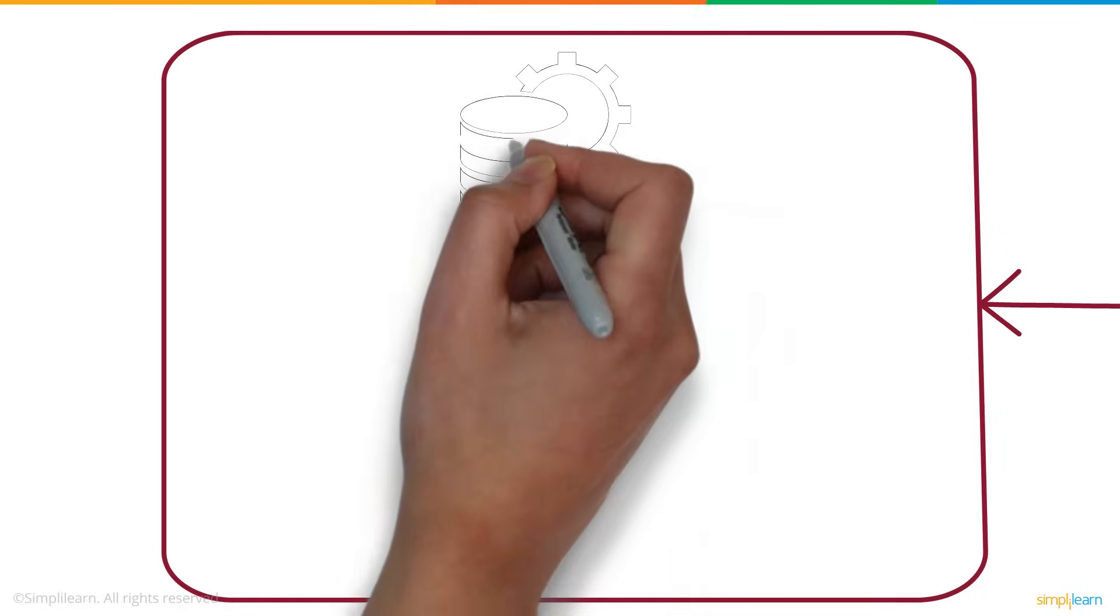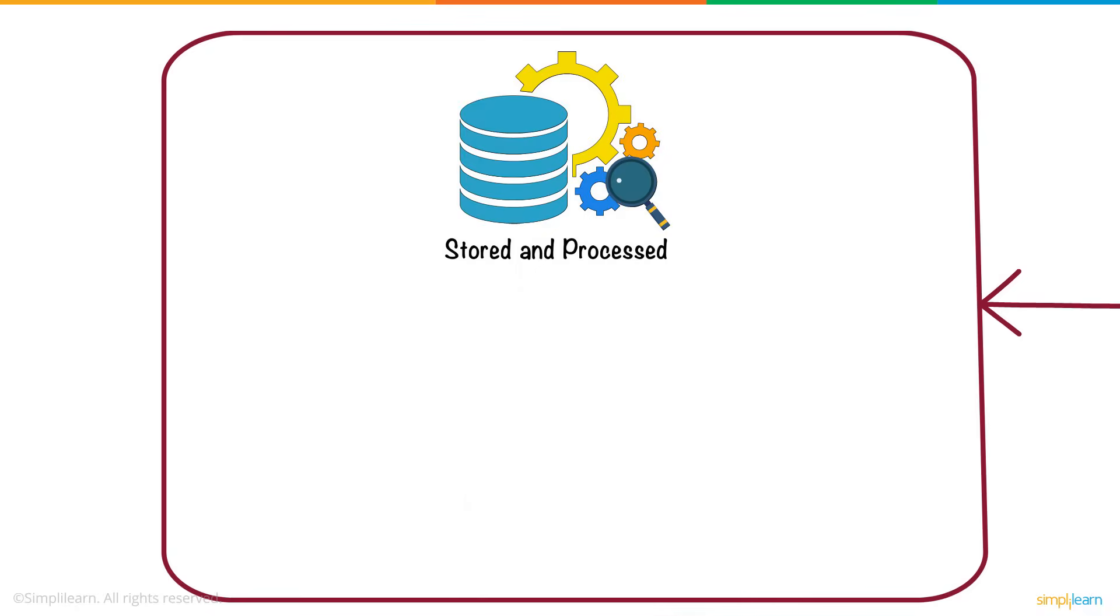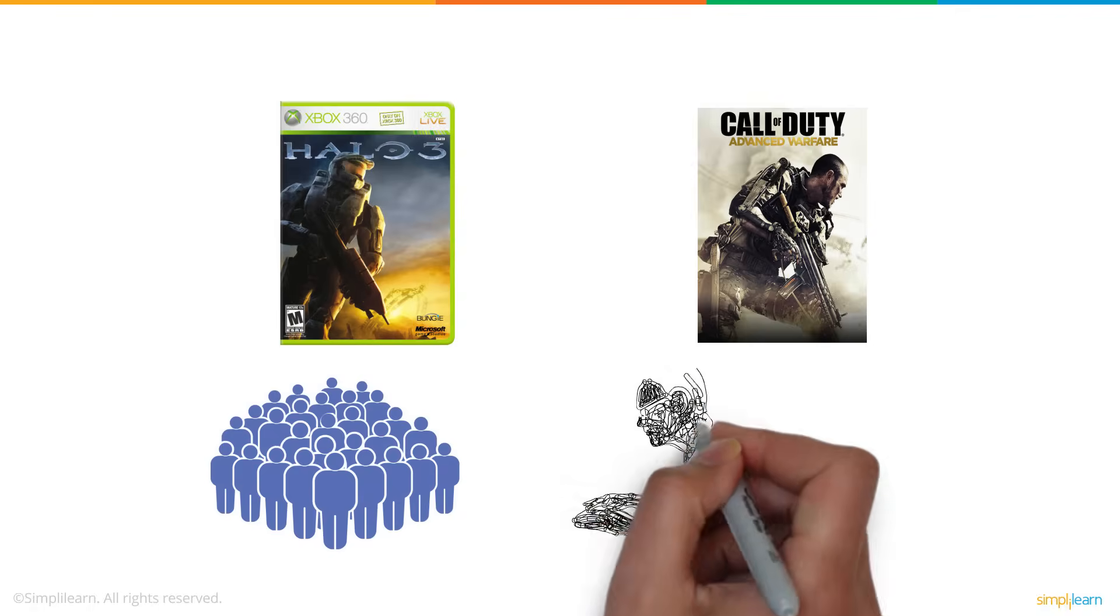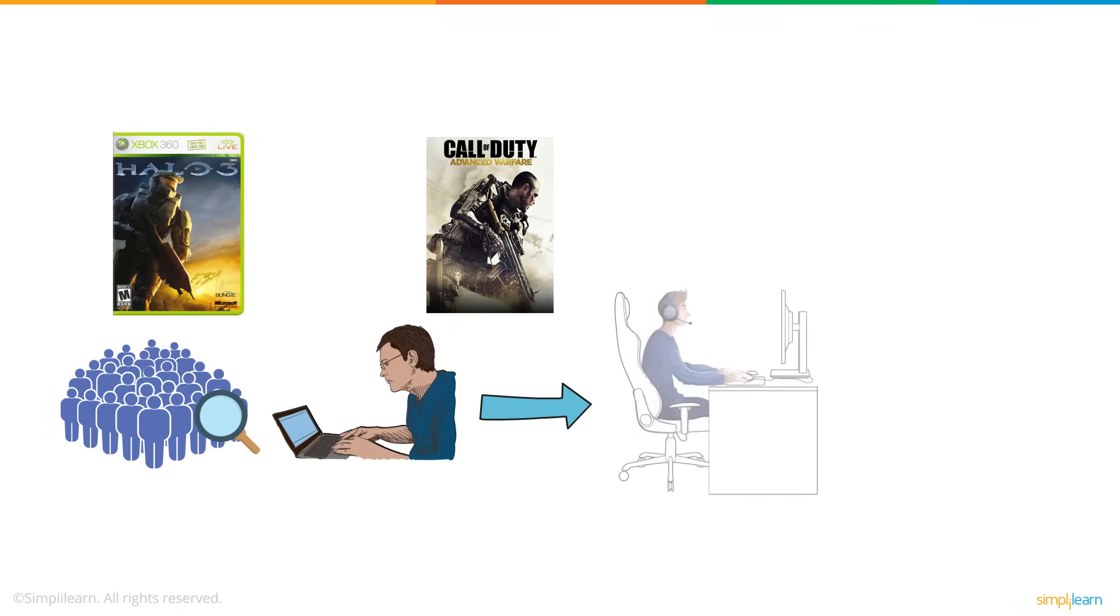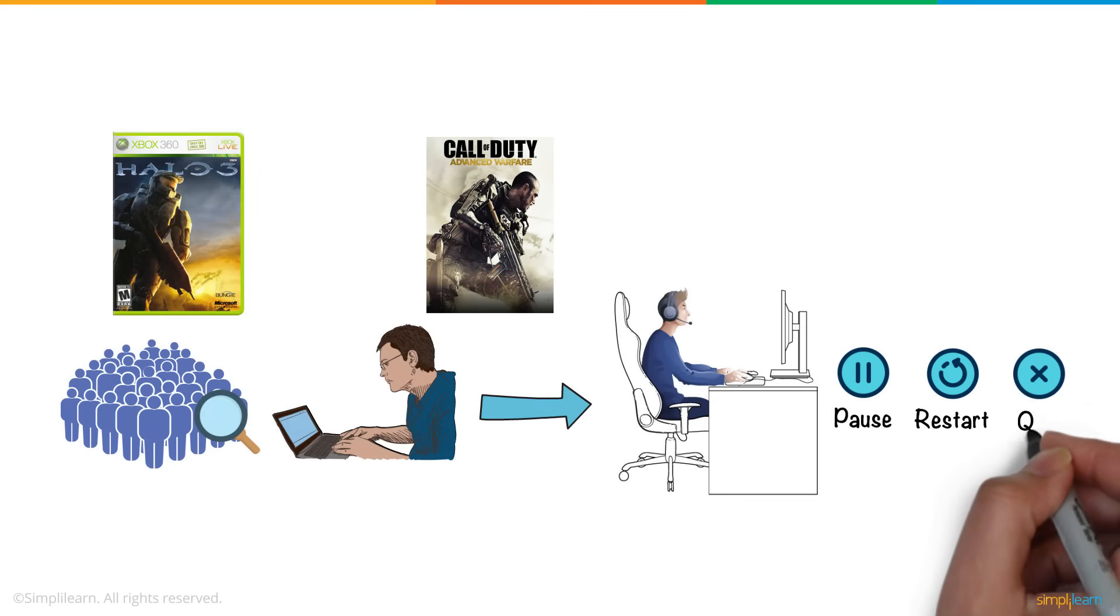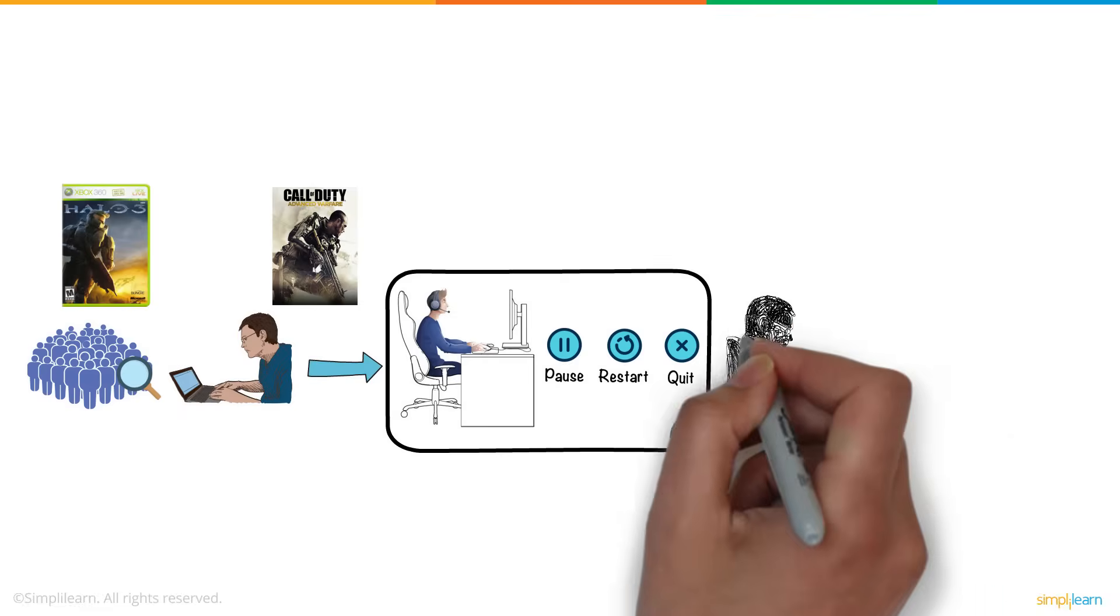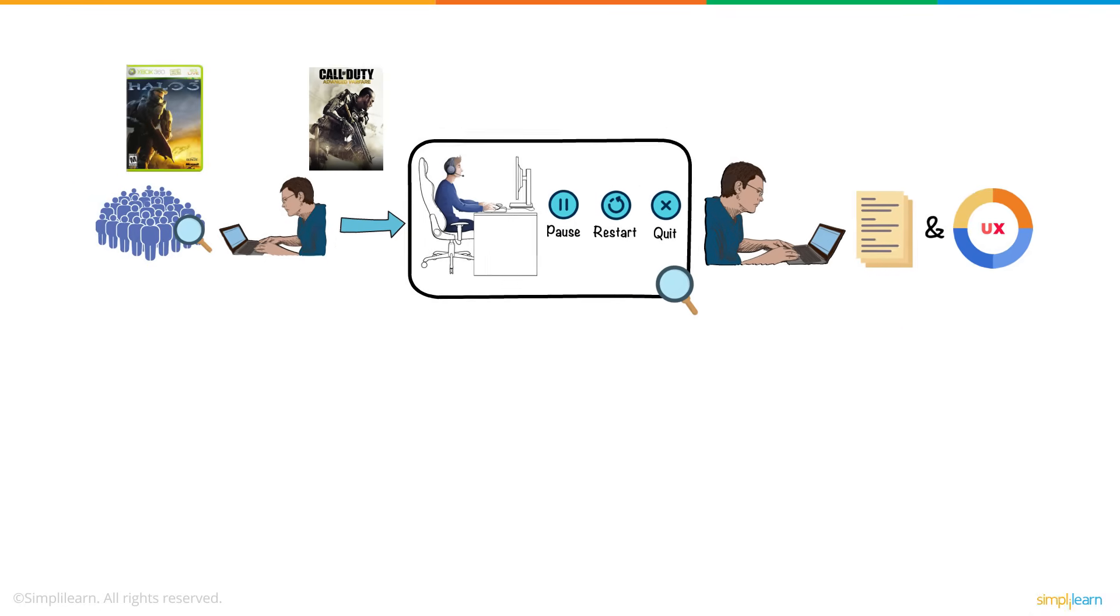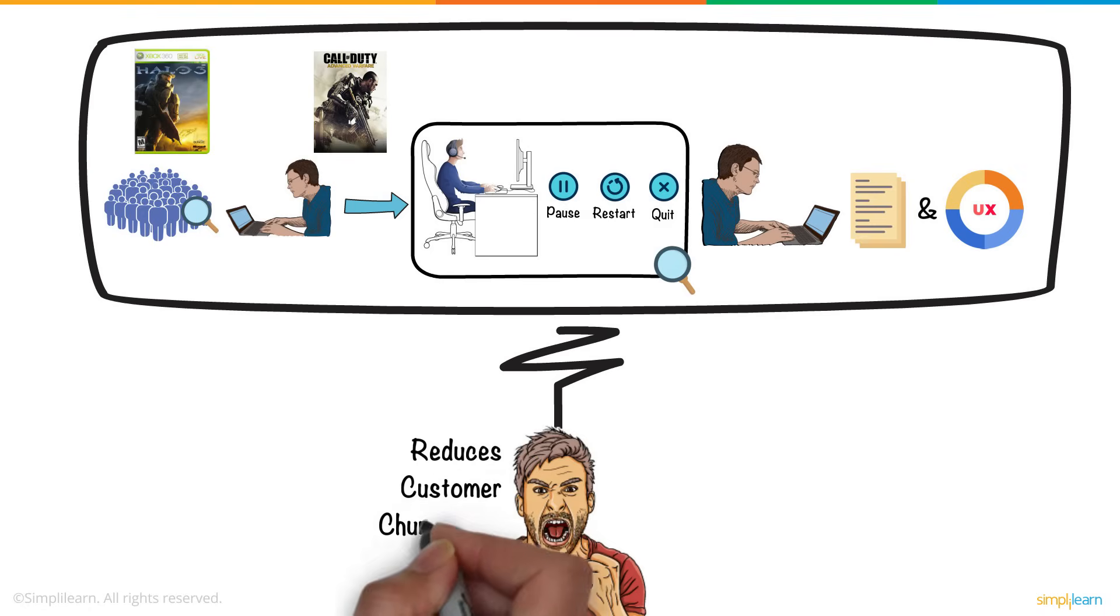Now that we have stored and processed our big data, we can analyze this data for numerous applications. In games like Halo 3 and Call of Duty, designers analyze user data to understand at which stage most of the users pause, restart, or quit playing. This insight can help them rework on the storyline of the game and improve the user experience, which in turn reduces the customer churn rate.